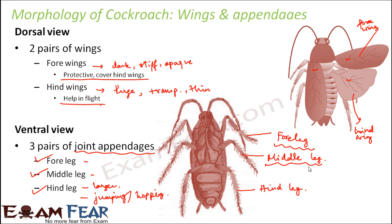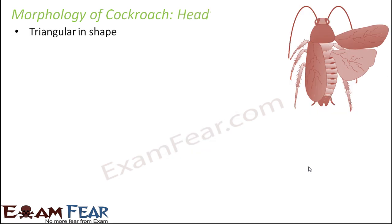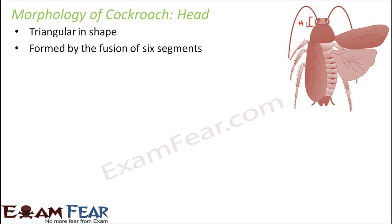Now let us talk about the head, which is also an important structure. The head is triangular in shape and is formed by the fusion of six segments. When you look closely, you can see six separate segments joined together forming the head. The head is located anteriorly at right angles to the longitudinal body axis.